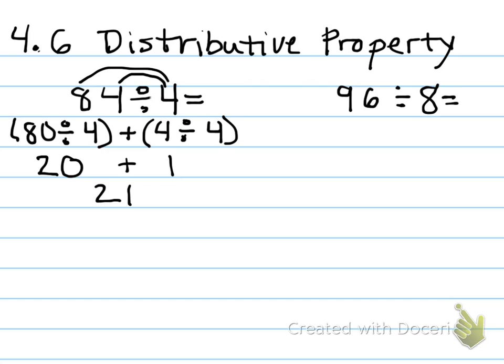Now say you have a problem like 96 divided by 8. Well, I know 90 isn't divisible by 8, so I'm going to have to break this down differently. What's close to 96 that I know 8 goes into? Actually, 96 is divisible by 8 — 12 times 8 is 96 — but let's keep it at 96, because maybe you don't know off the top of your head that 96 is divisible by 8.